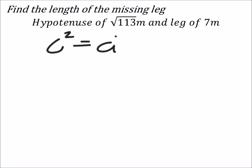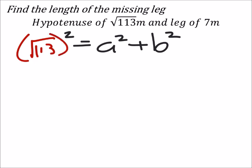We got c squared equals a squared plus b squared. Once again, it doesn't matter which leg you replace for a and b, but the hypotenuse always has to be the c value. So I will replace the c value with the square root of 113. And this time, for the sake of randomness, let's go ahead and replace the a value with 7.